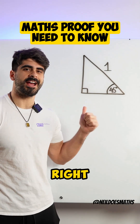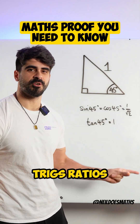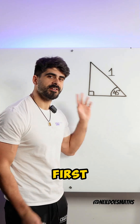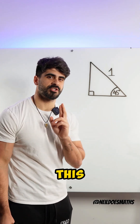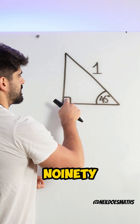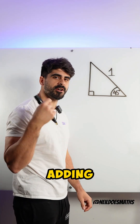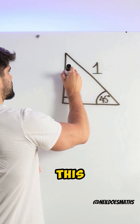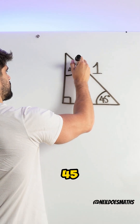How do we use this right angle triangle to prove these trig ratios? Let's take a look. First things first, we need to find the other lengths in this triangle. Because this angle is 45 and this is 90, we can use angles in a triangle adding up to 180 degrees to find this missing angle to be 45 degrees.